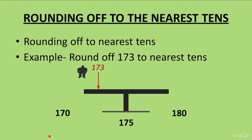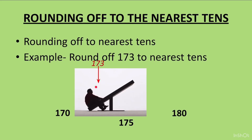The same example explained with a seesaw — you don't need to draw this in your copy; it's just to help you visualize. Imagine a seesaw with 170 on one side and 180 on the other, with 175 at the center. Since 173 lies between 170 and 175, a person sits on that side, the seesaw tips down toward 170. So 173 rounds off to 170.